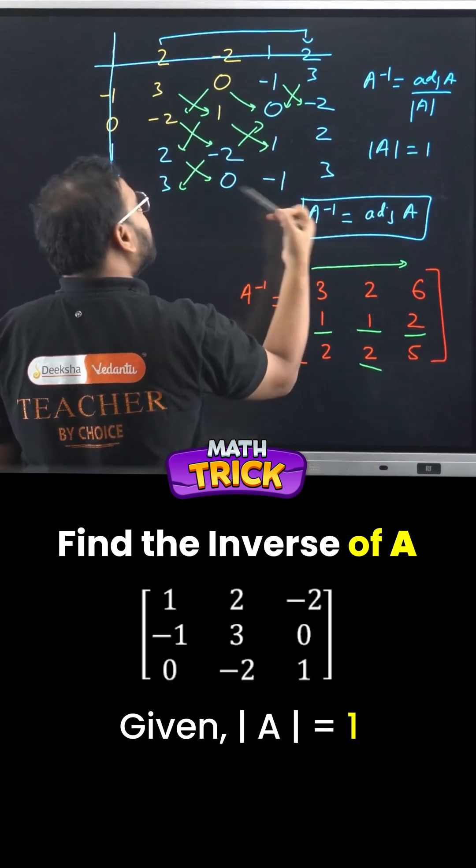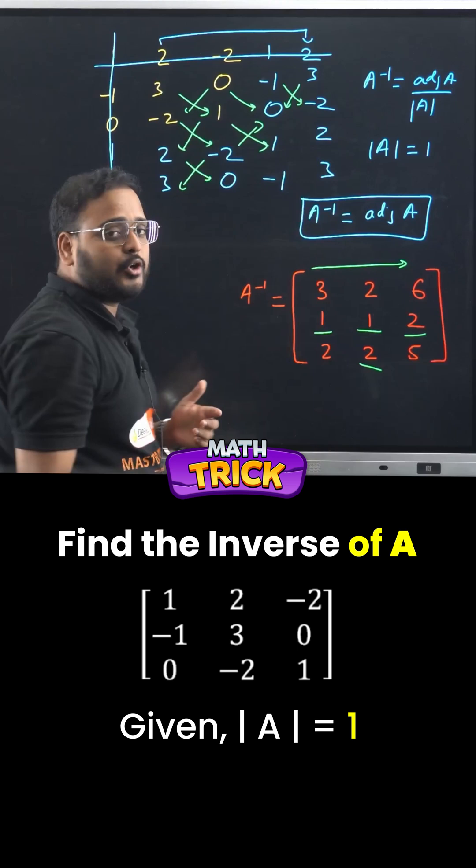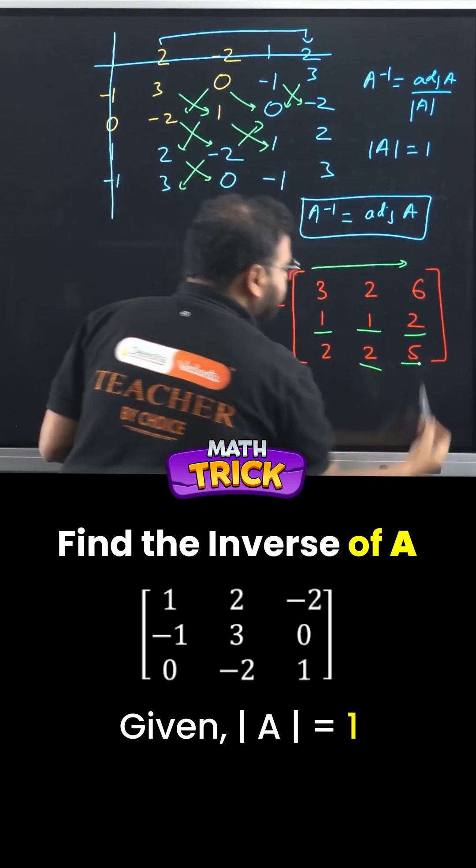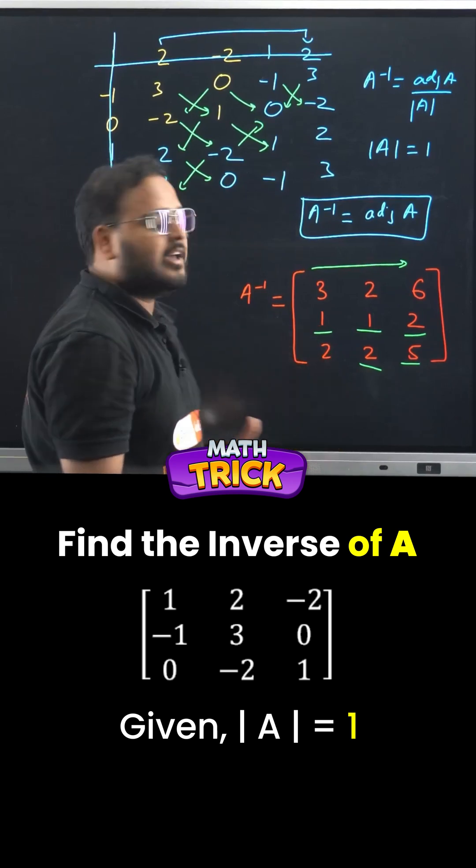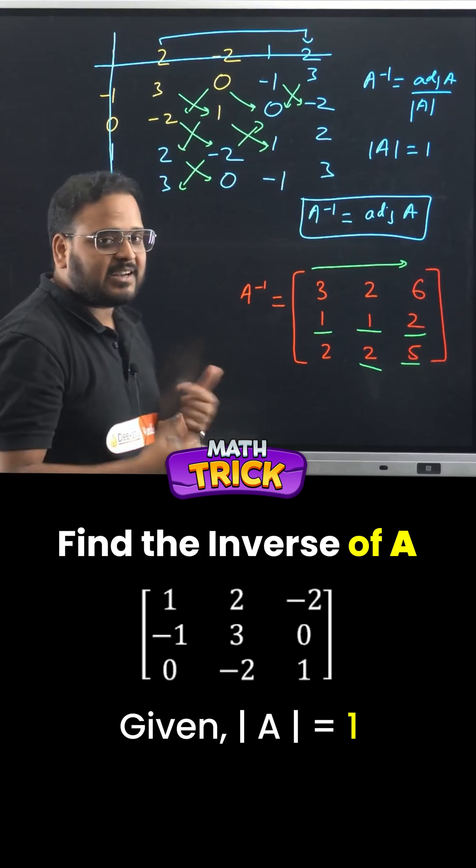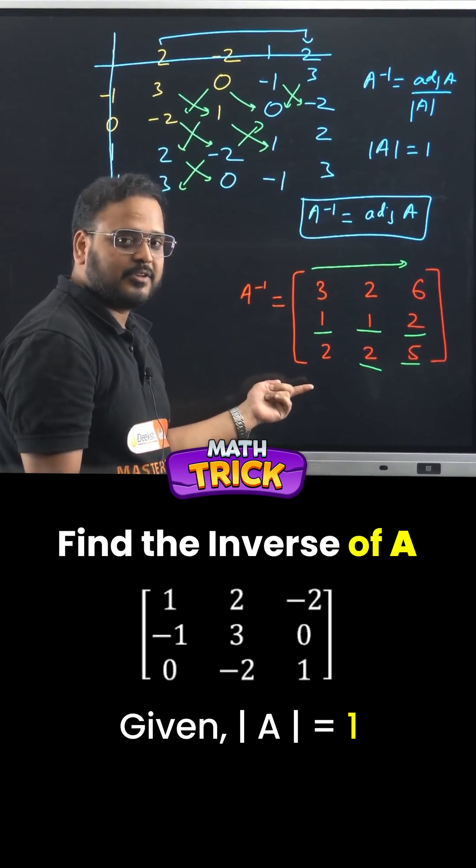And last one, 1 into 3 is 3 and subtraction of 2 into minus 1, minus 2 makes it plus 2, answer is 5 over here. This is my final answer for inverse 3, 2, 6, 2, 2, 5, isn't that easy, this is my final answer for inverse, see?